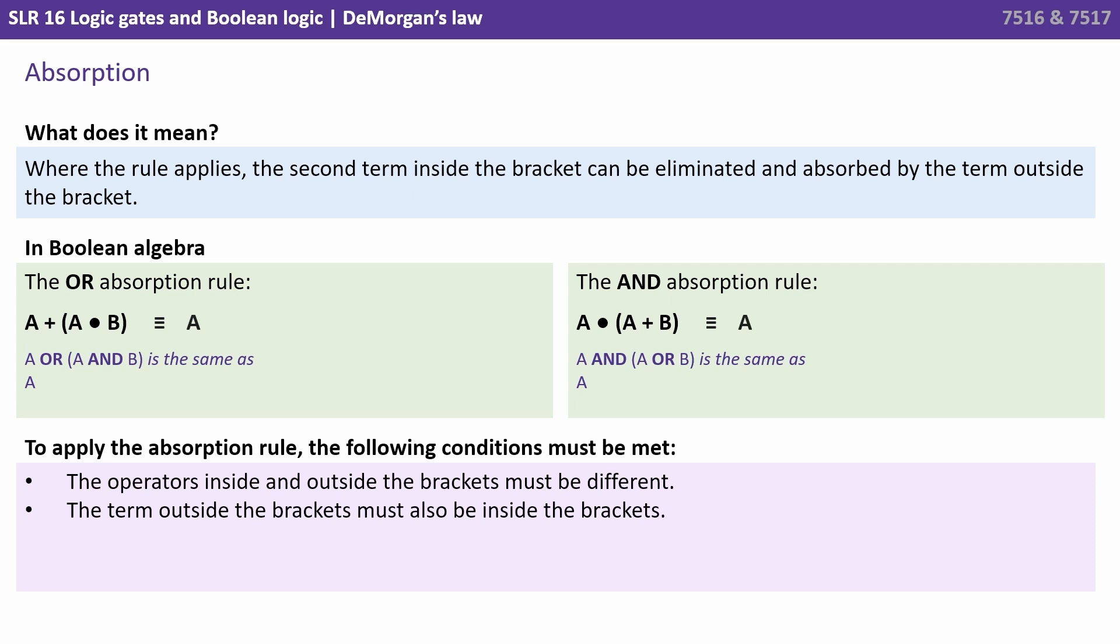And finally the rule of absorption. Where the rule applies the second term inside the brackets can be eliminated and absorbed by the term outside the brackets. And again there's an OR and an AND version. To apply this rule the operators inside and outside the brackets must be different. And the term outside the brackets must also be inside the brackets. So let's look at the OR version of the absorption rule there. We've got A OR A AND B. So the operator inside and outside the brackets must be different. Well they are. We've got an AND inside and OR outside. And the term outside the brackets must also be inside the brackets. We have an A outside and an A inside. Both rules have been met. We can apply the rule of absorption and that entire expression can be simplified down to just A. And we can see a very similar thing on the right with the AND version of the absorption rule.